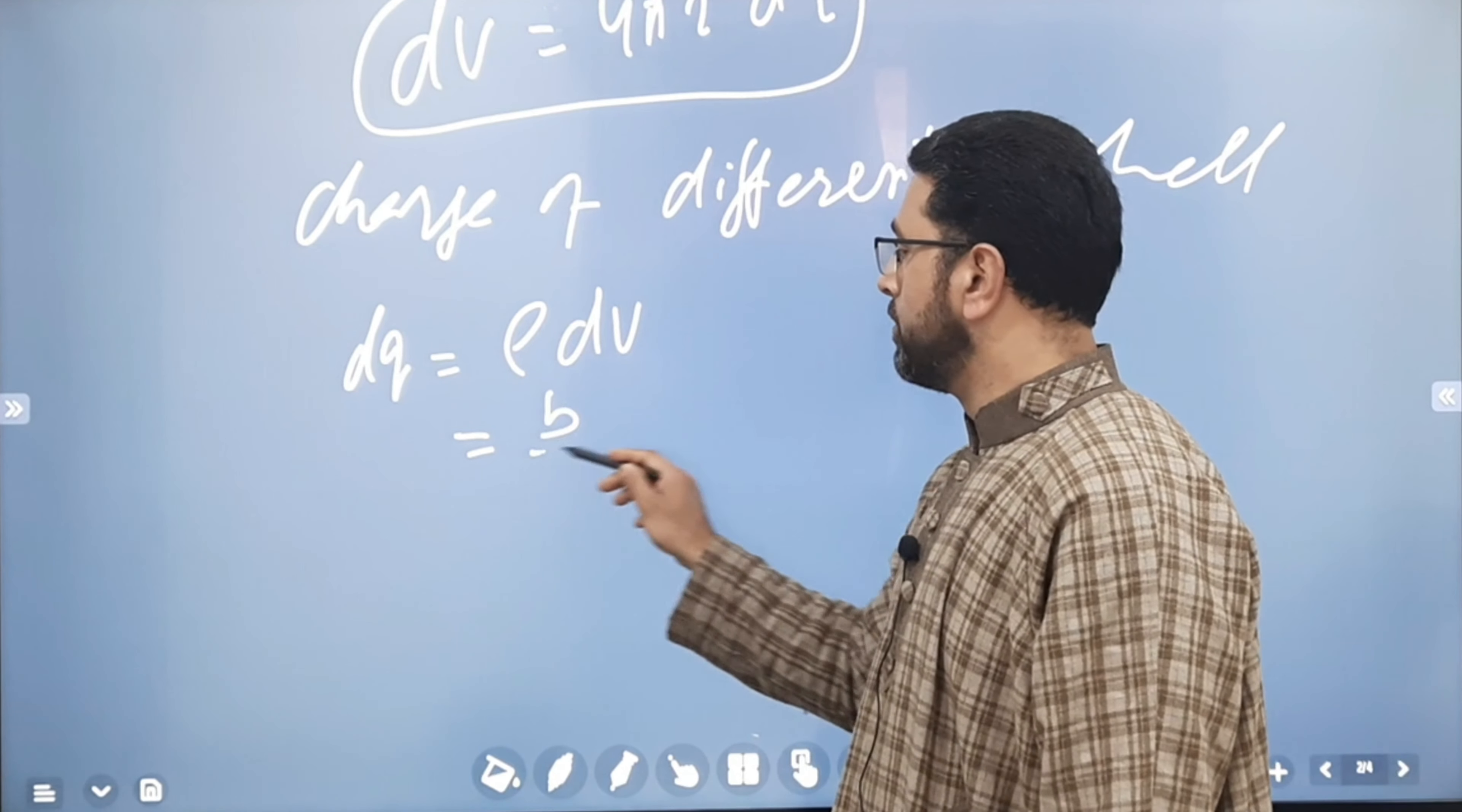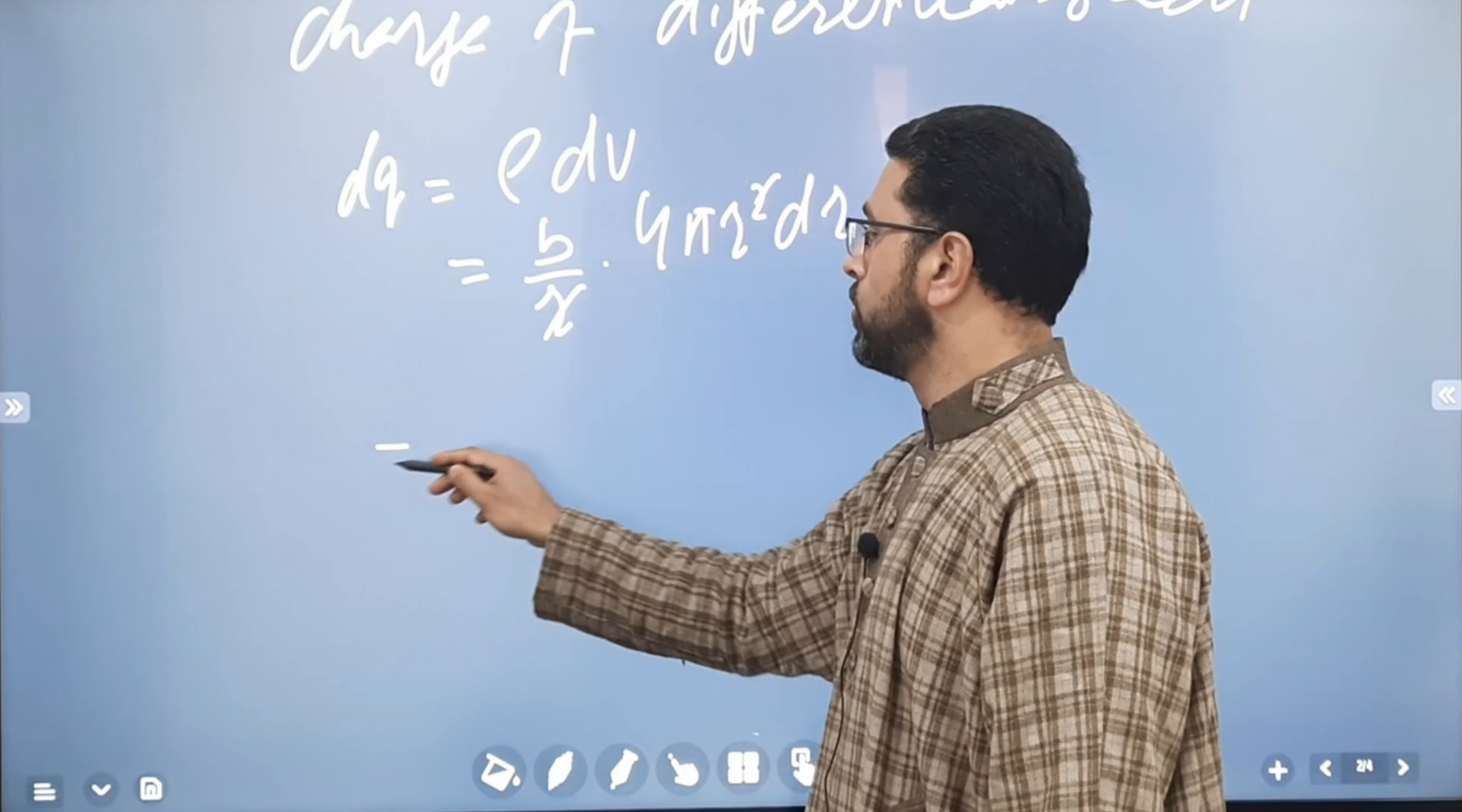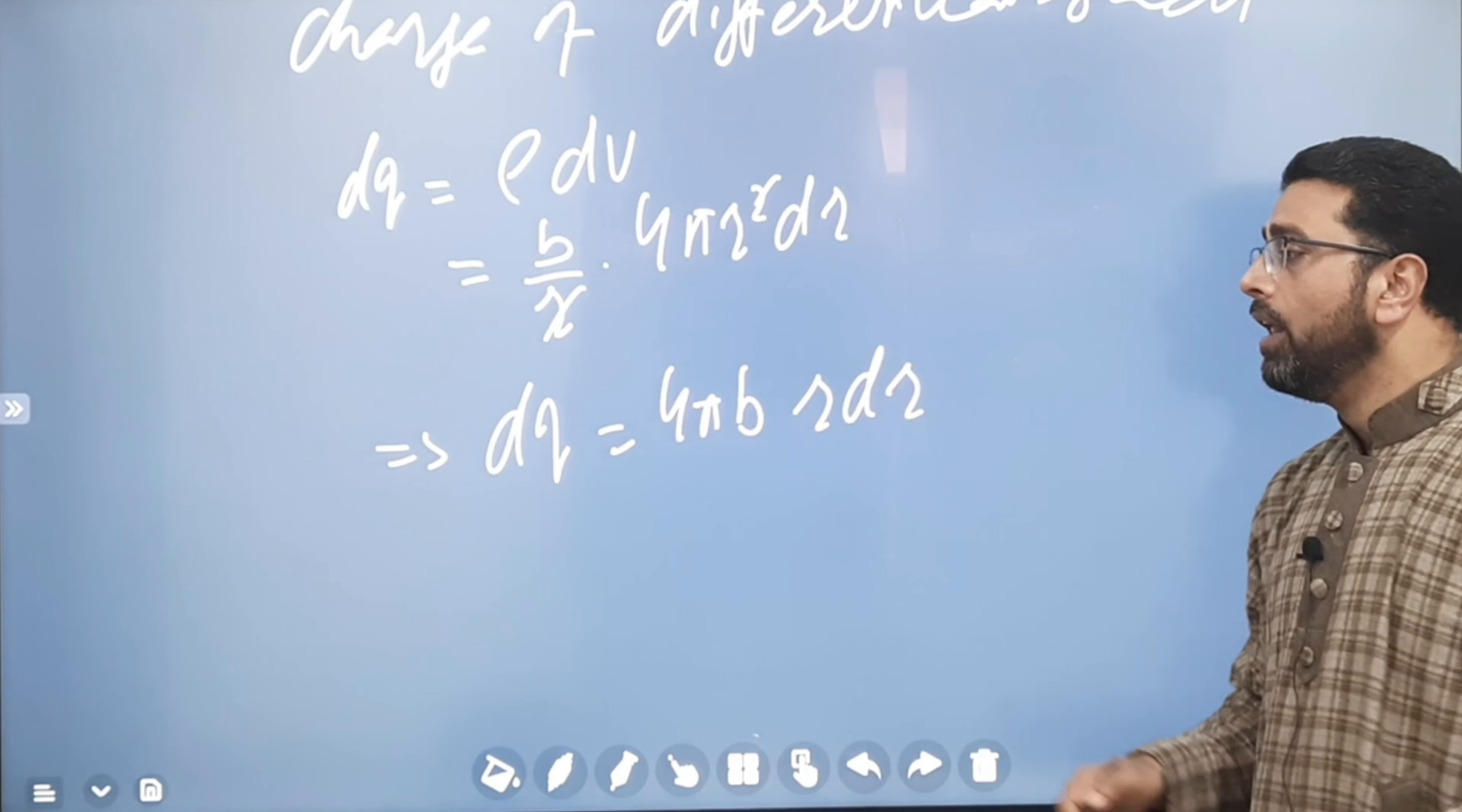Now, rho is B divided by R and dV is 4 pi R square dr. One of the R's goes, so dQ is equal to 4 pi B R dr. This is charge of the differential shell.